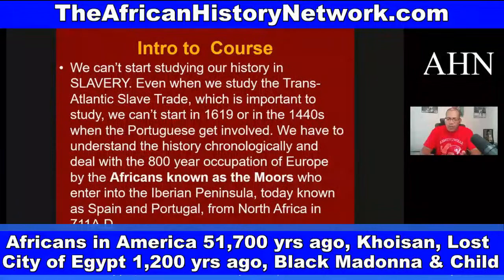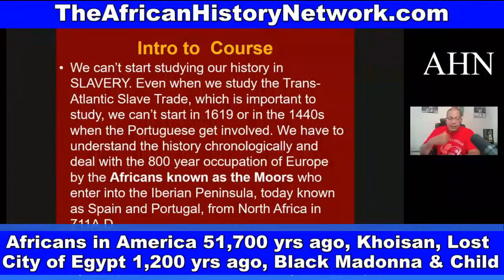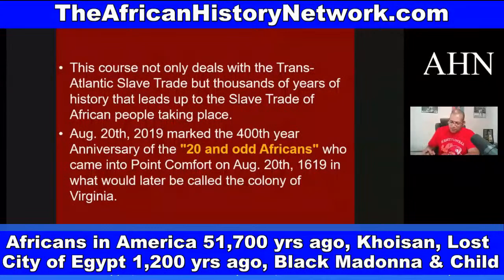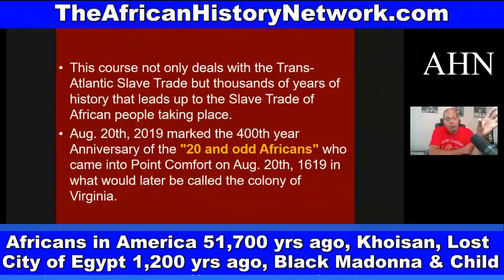We also have to deal with the 800-year occupation of Europe by the Africans known as the Moors, who took the teachings from Ancient Kemet — Ancient Egypt — into Europe. These teachings would bring Europe out of the Dark Ages. When those Africans known as the Moors went into the Iberian Peninsula — today known as Spain and Portugal — in 711 AD, they Africanized Europe to various extents. We see the Moors lose control in Europe, especially in Spain, with the last known stronghold relinquished on January 2nd, 1492.